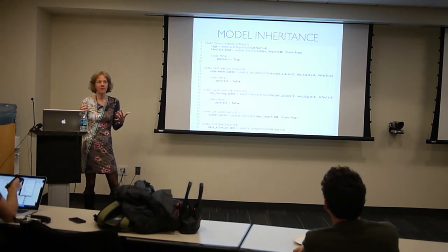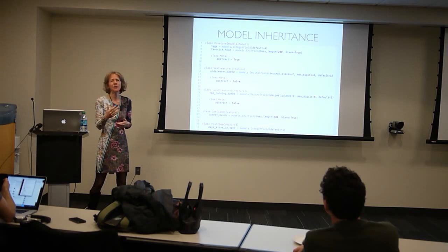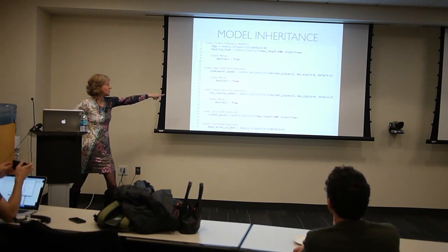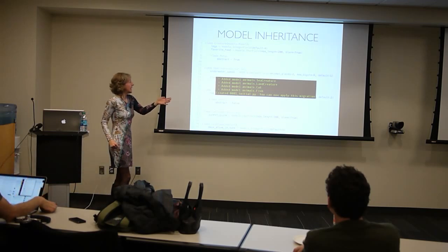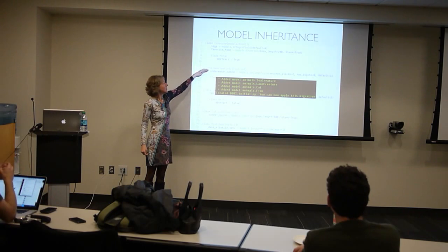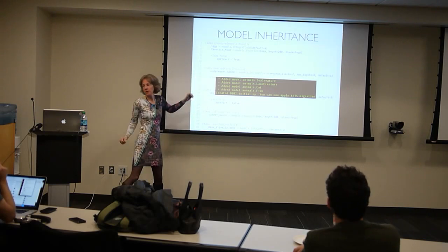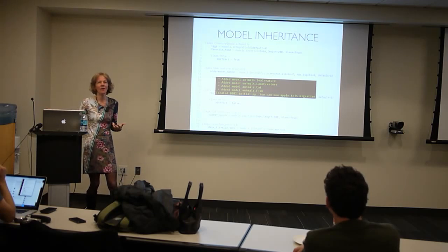This happened in an application I was working on with a huge number of models, all inheriting from giant trees of model inheritance. Somewhere in the middle of one of those trees, somebody forgot to put abstract equals true. So we ended up with this database structure that functioned perfectly, but it looked right in the database and made data migration difficult. I thought it was interesting and worth bringing up. If we change these from abstract equals true to false, and we want the same migration, it is now adding four models. The sea creature model is going to have underwater speed, and the fish model is going to have a foreign key to the sea creature model.